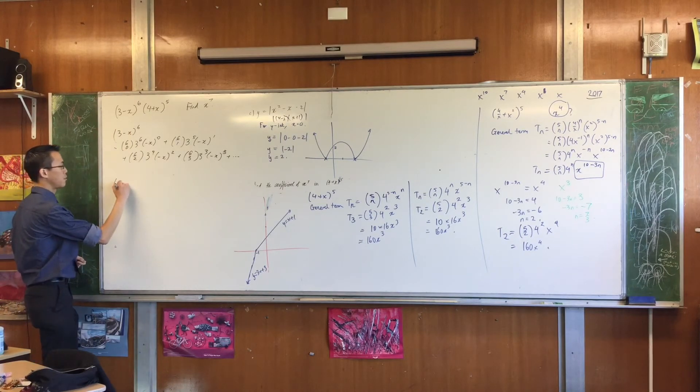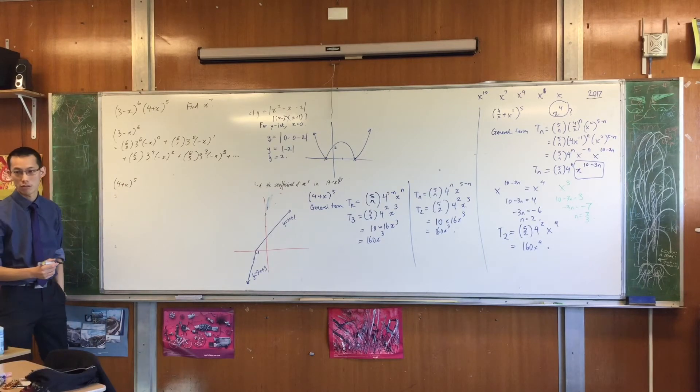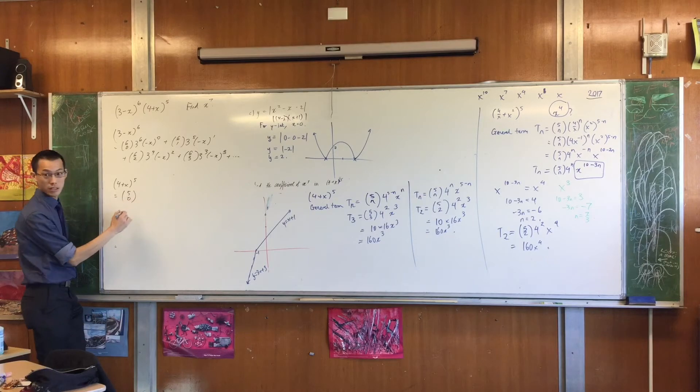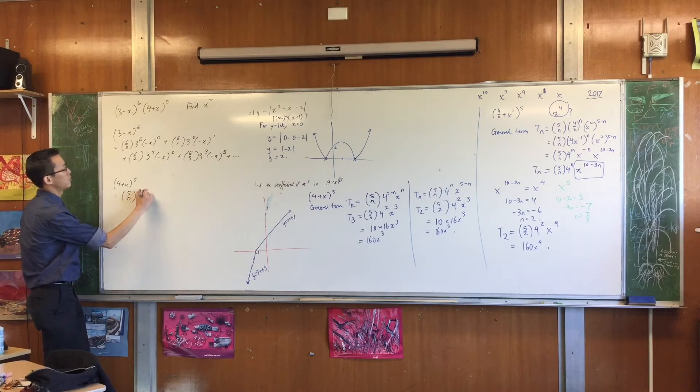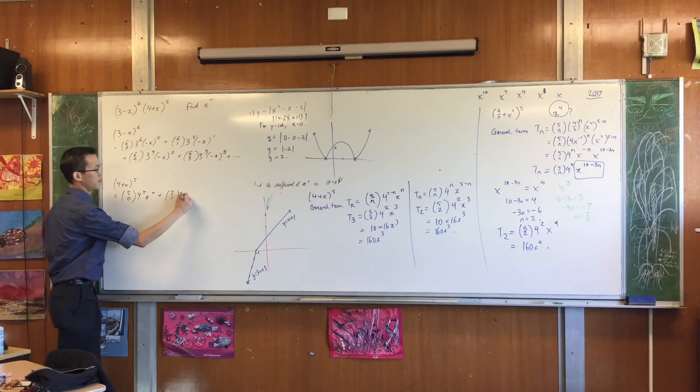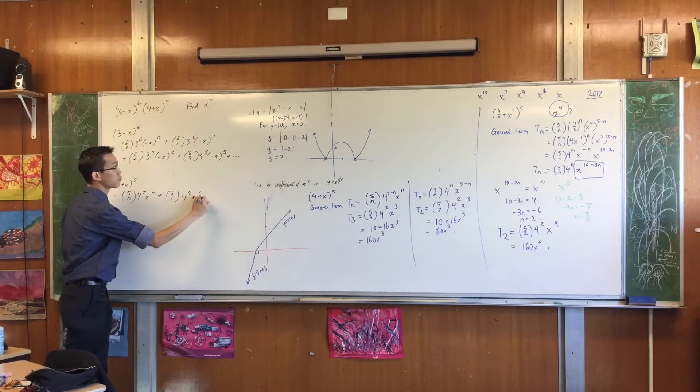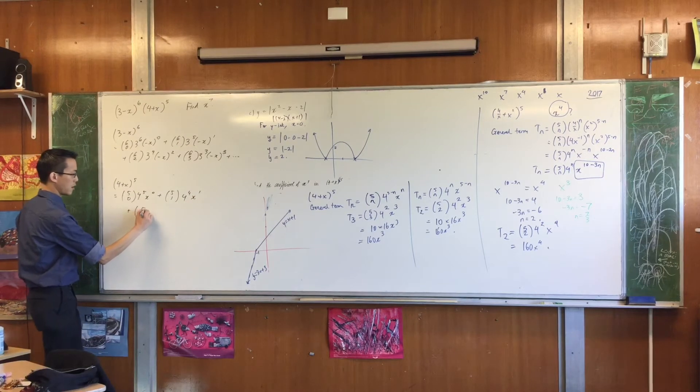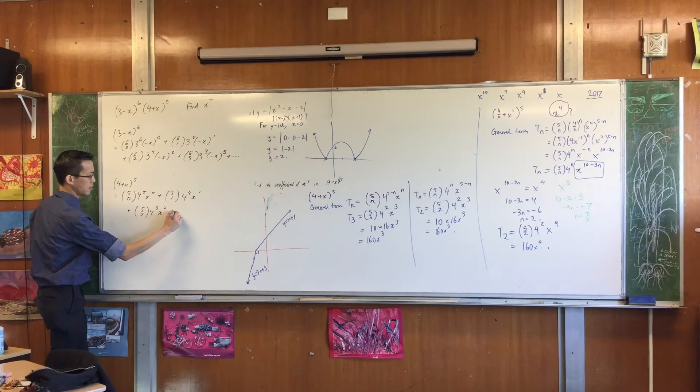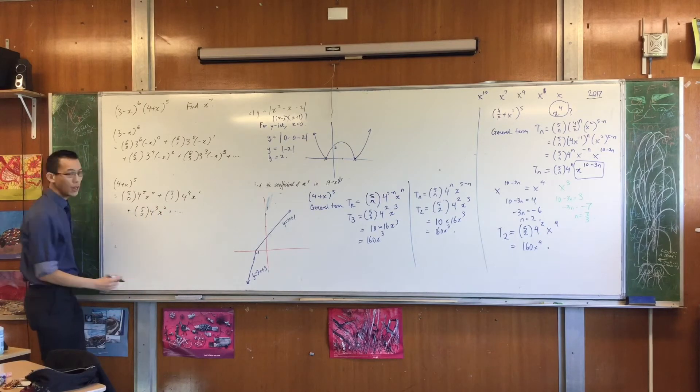When I expand the right-hand binomial, what happens? What am I going to get? Which row am I on? I'm on the fifth row. The first one is the zeroth term. What have I got here? 4 to the 5, x to the 0. 5C1, 4 to the 4, x to the 1. 5C2, 4 cubed. This is counting down. Dot dot dot.